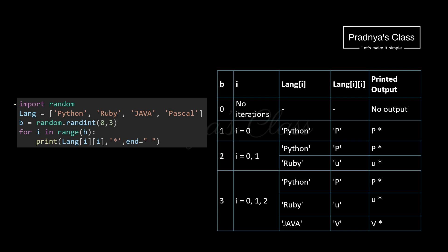Here is the dry run table. Let's try to understand the code. The random module got imported and here is a list of strings. From the random module, we are using the randint function, which will generate a number from 0 to 3, inclusive of both limits — meaning we will get 0, 1, 2, and 3. In the for loop, the variable I will take values in the range of B. With the print statement, we are printing a character from the string. After the character, a star will get concatenated, and the end parameter is a space.